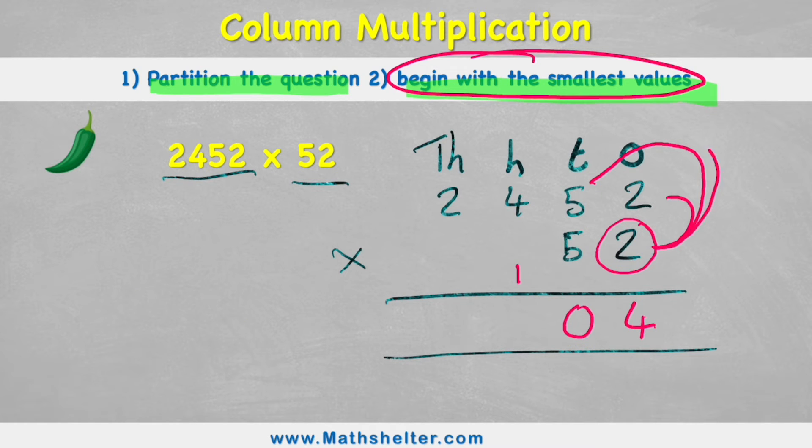Let's go to the next question. 2 times 4, which is 8. But don't forget about this 1. Add it on. Equals 9. And my final question is 2 times 2, which is 4. So what I've just done here is I've just answered 2 times 2,452, and that equals 4,904.